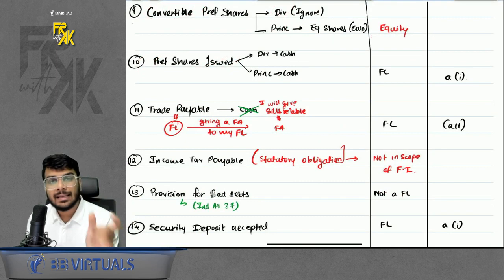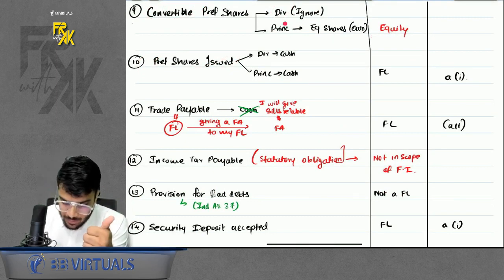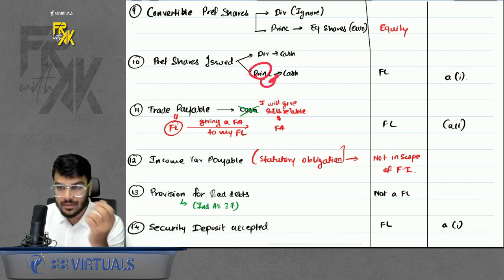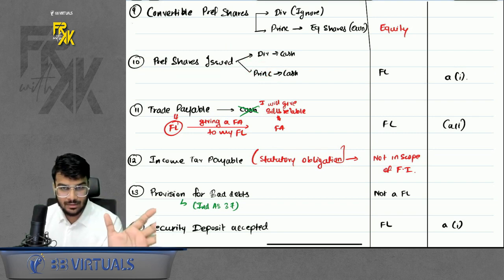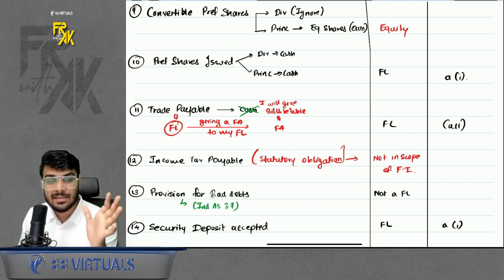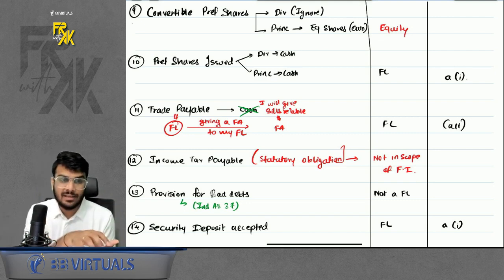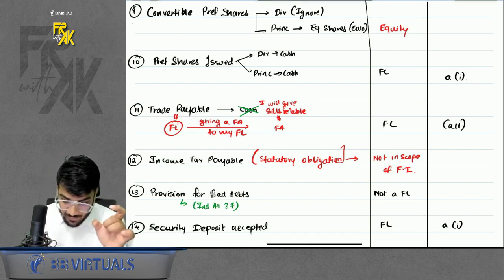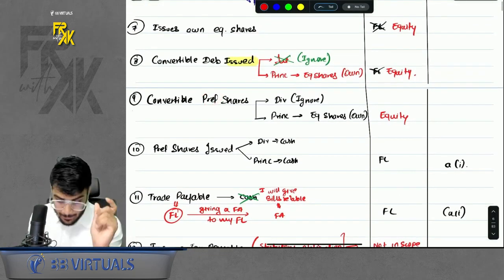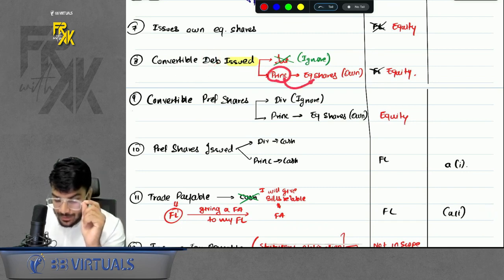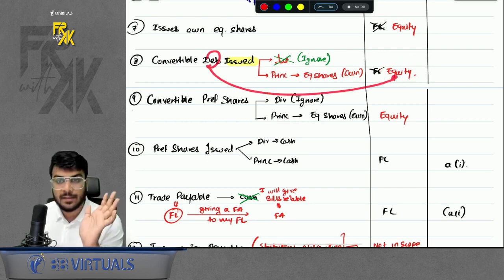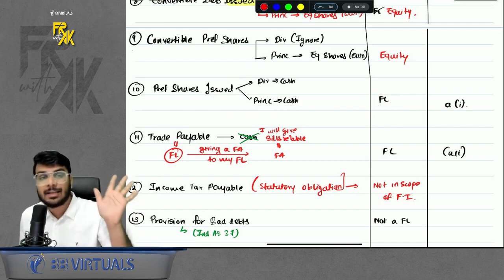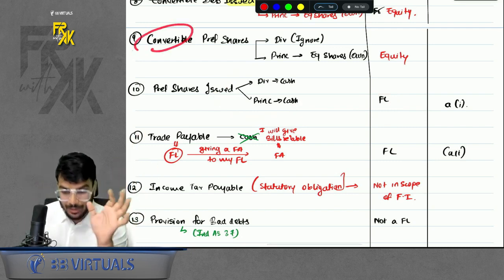Redeemable preference shares — where both dividend and principal are paid in cash — are financial liabilities. For compulsory convertible preference shares or debentures, the principal settled in own equity shares is an equity component. As per IND AS, substance over form applies: a debenture can be equity if it is convertible (principal in own equity shares), and a preference share can be a financial liability if it is redeemable. This depends on whether the instrument is convertible or redeemable.